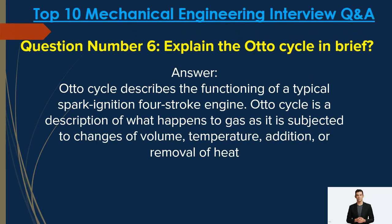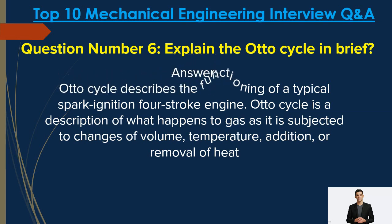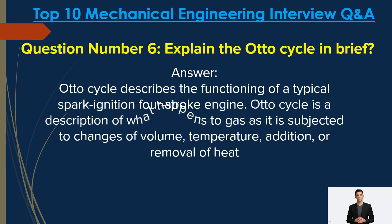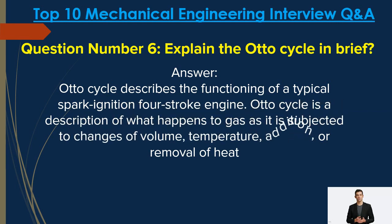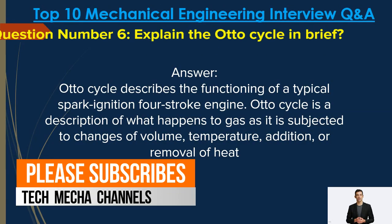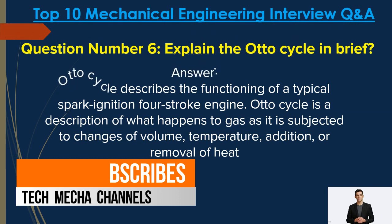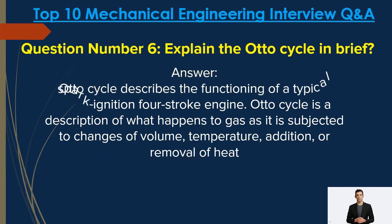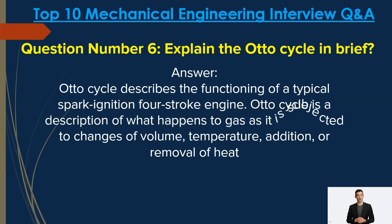Question number six: Explain the Otto cycle briefly. Answer: The Otto cycle describes the functioning of a typical spark ignition engine. It is a description of what happens to a gas as it is subjected to changes of volume, temperature, and addition or removal of heat.